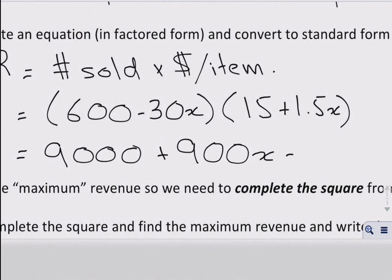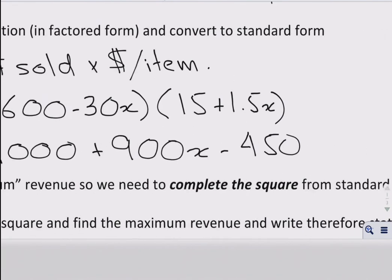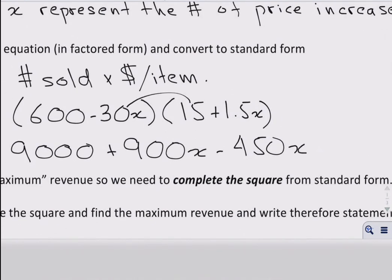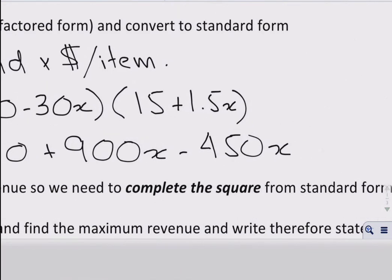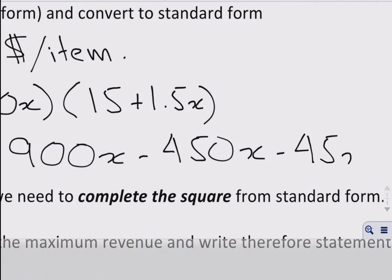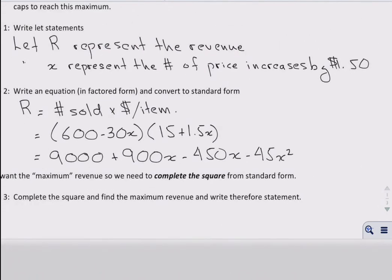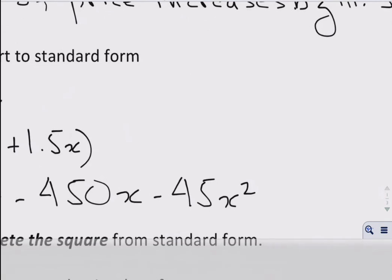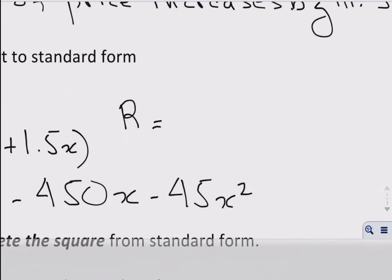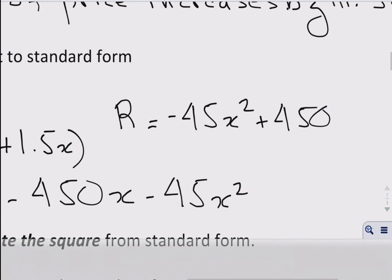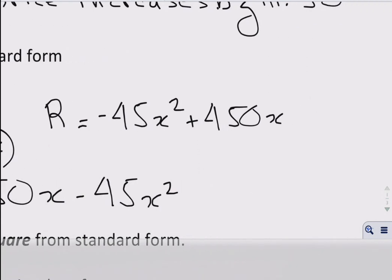Then I have plus 1.5 times 600, so that'll be 900, and I have minus 450 because that's the 30 times 15, and finally I have minus times 1.5, 45x squared. So there's our equation. Let me just collect the like terms and rewrite everything. R is equal to negative 45x squared plus 450x and then plus 9000.